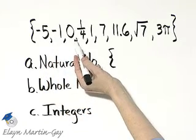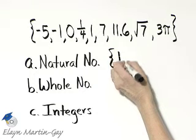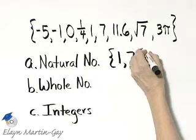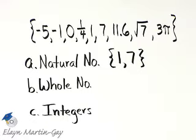Zero is not a natural number. One is, and seven is, and those are the only two natural numbers I see.